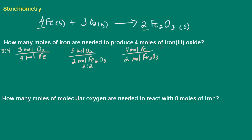Mole ratios can be used as conversion factors. For example, I can write this one either like this or like so — you have loads of conversion factors you can make from your balanced equation. It's very important that your equation be balanced, or else you're always going to get the wrong answer. So here I'm asking: how many moles of iron are needed to produce four moles of iron-3 oxide?